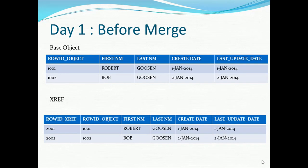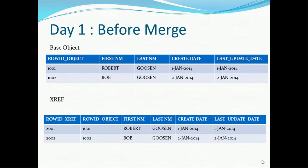Let's go over the create date in the base object and XREF tables. Assume on Day 1, this is a before-merge case: we ran the Stage job, the Load job, and then the Match and Merge. We have two records — Row ID 001 for 'Robert Guson' with created date 1 January 2014, and Row ID 002 for 'Bob Guson' with created date 2 January 2014. The last update date is the same as the created date since this is just before the merge. In the XREF, we have the exact same copies with the same created and last update dates.